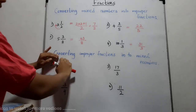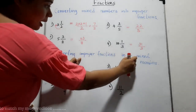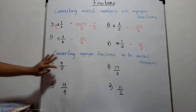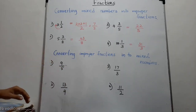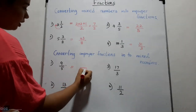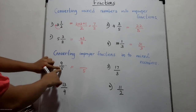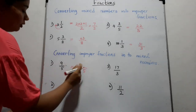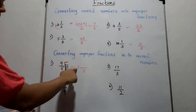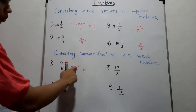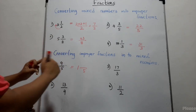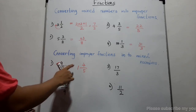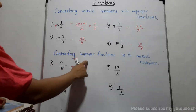Now let's see how to convert a given improper fraction into a mixed number — the opposite of the previous method. The first one: nine-fifths. The denominator is five. We find how many fives there are in nine — there is only one five. Five into one is five, and to obtain nine we add another four. So nine-fifths converts to one and four-fifths.